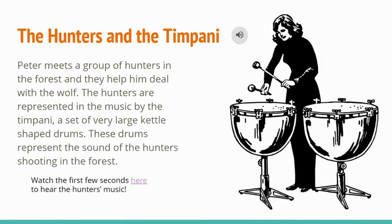Our final characters that come up in the story are hunters, and they're represented by the timpani. Peter meets a group of hunters in the forest and they help him deal with the wolf. The hunters are represented in the music by the timpani, a set of very large kettle-shaped drums.